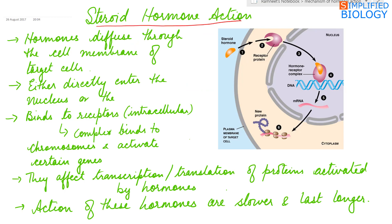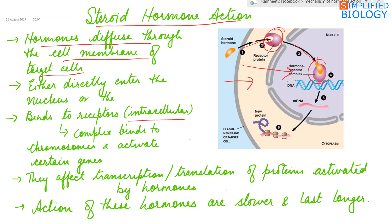Next, the steroid hormone action. These hormones diffuse through the cell membrane of the target cell as they are lipid-soluble, so the receptors are intracellular. They either enter the cytoplasm or directly enter the nucleus. In the cytoplasm or nucleus, they form a complex with the receptor. The complex binds to chromosomes, activating certain genes. They then affect either transcription or translation of proteins activated by the hormones. Actions of such hormones are slower and last longer.